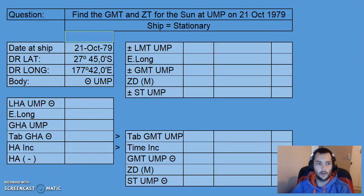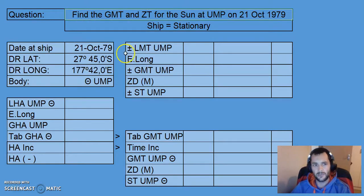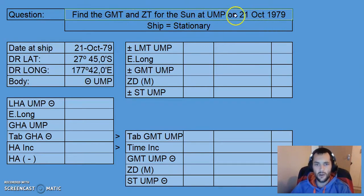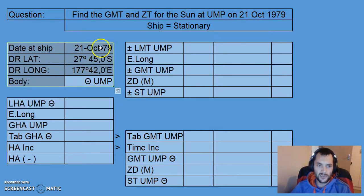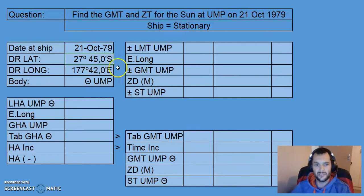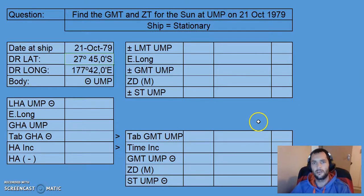Welcome to the second video on Upper Meridian Passages for the Sun. We're still going to be working with stationary ships and there's still no vectors involved. The question asks us to find the GMT and the zone time for the Sun at Upper Meridian Passage on the 21st of October 1979. The ship is stationary; latitude is 27°45.0' South, longitude is 177°42.0' East, and the body is the Sun at Upper Meridian Passage.